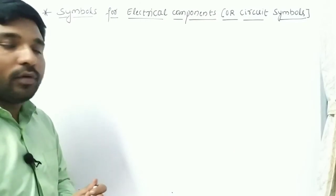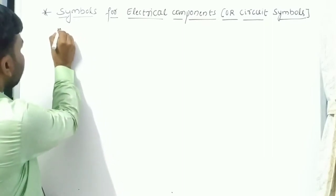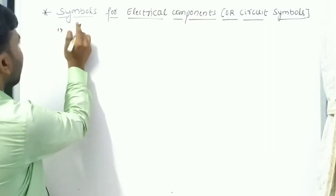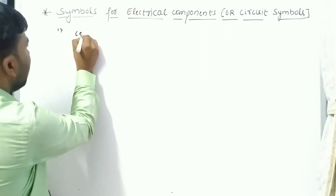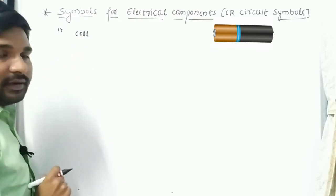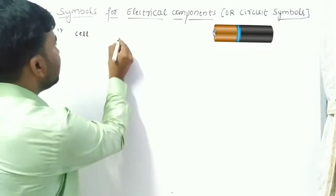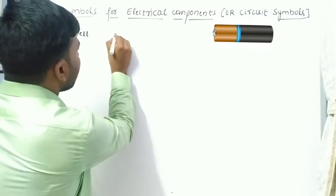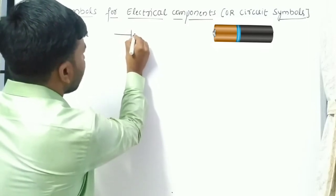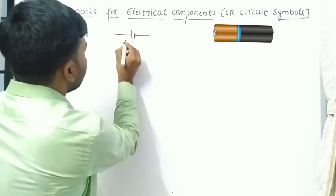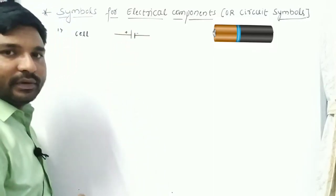The first electrical component is a cell. Here is the circuit symbol for the cell — this is the positive terminal and this is the negative terminal.